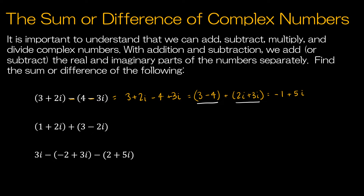For the next problem, I would just show minimal work. I'm going to look at 1 and 3 — it's plus, so 1 plus 3 is 4. Then I have plus 2i and minus 2i, so plus 0i, but 0i is still 0. So my final answer is 4. That's really all the work I would show — I trust you to do that math mentally.